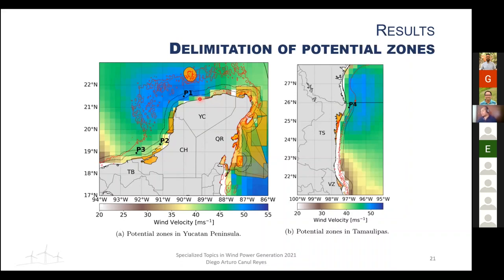All four points satisfy the geographical restrictions, falling within the dashed black line (distance to shore) and the red line (bathymetry). Points 1 (Yucatan) and 4 (Tamaulipas) correspond to capacity factors near or above 50% on average over the 39-year period, while Points 2 and 3 in Campeche average between 40 and 45%.